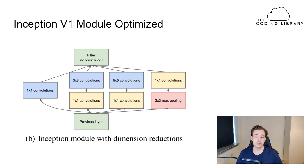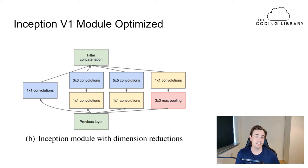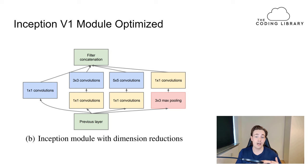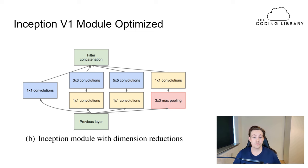There is also an optimized version of the Inception version 1 module to reduce computational complexity. If we simply have four different transformations per layer, we add significant computational cost. To optimize this and reduce the dimensions of the input from previous layers, we introduce 1x1 convolutions before the heavy convolution operations like 3x3, 5x5, or even 7x7. This reduces the input dimensions before those computationally expensive convolutions.